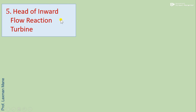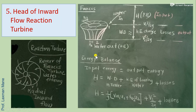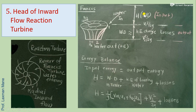For the head of inward flow reaction turbine, the input potential energy (head H) equals: work done in runner + kinetic energy leaving with water at point 2 (v2²/2g) + losses. The energy balance gives: H = (1/g)·(vw1·u1 + vw2·u2) + v2²/(2g) + losses.